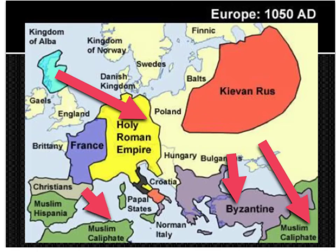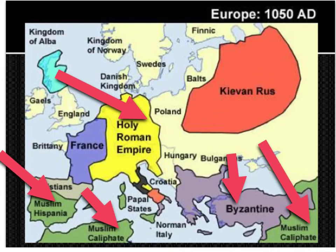The Muslims are also in North Africa and are also called the Moors in Spain. If you look at Italy, where the Pope is — in the Papal States — you will see that they are all broken up, and it's going to remain this way until about the 1800s.